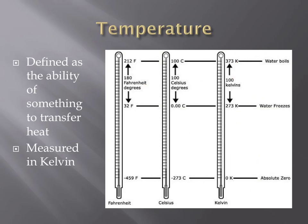Temperature can be defined as the ability of something to transfer heat. There are three different common scales or measurements for temperature: Fahrenheit, which is used pretty much exclusively in the United States, Celsius, which is used throughout most of the rest of the world, and Kelvin, which is used most commonly in scientific contexts.